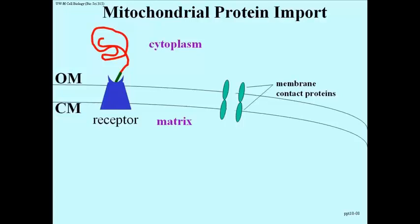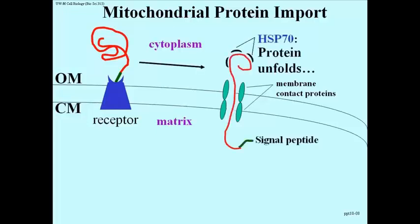Here's how mitochondrial protein import occurs. We have a protein in red in the cytoplasm with a green signal sequence, interacting with a membrane receptor that links the outer membrane with the cristal membrane. It's actually a protein complex that spans the intermembrane space of a mitochondrion and has protein components in the outer membrane and in the cristal membrane. That's the receptor interacting with the protein.